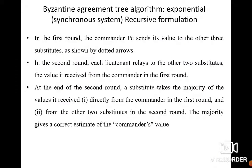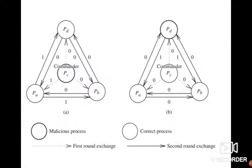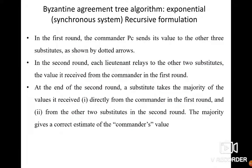At the end of the second round, each substitute takes the majority of the three values it has: the value directly from the commander in round one and the values from the other two substitutes in round two. For example, in the second diagram PA receives value 1 from PD, value 0 from PC, and value 0 from PB. Since 0 is the majority, PA selects 0 as its final value. This is how agreement is achieved using a recursive formulation in the Byzantine agreement tree algorithm.